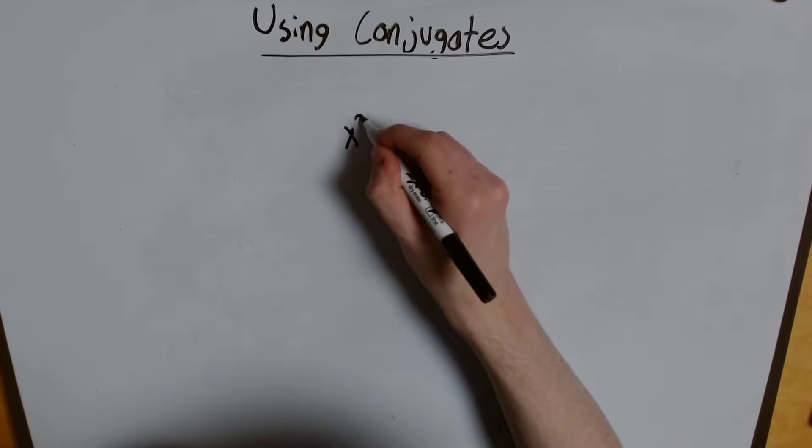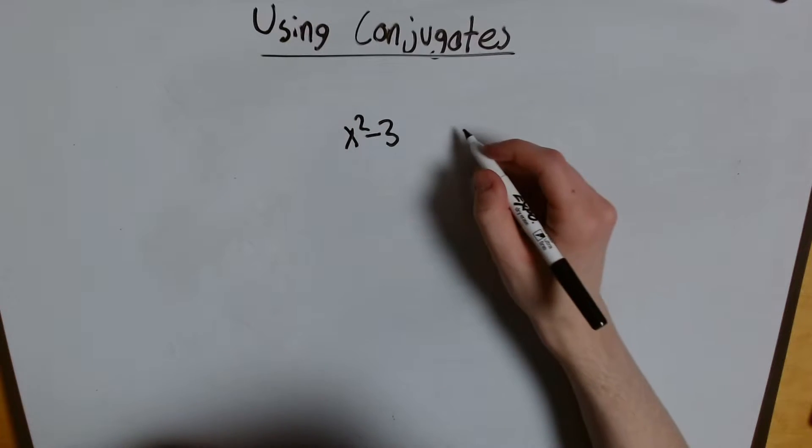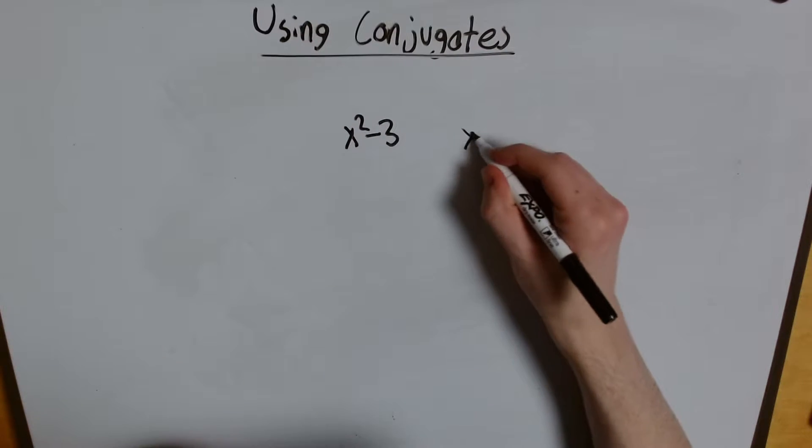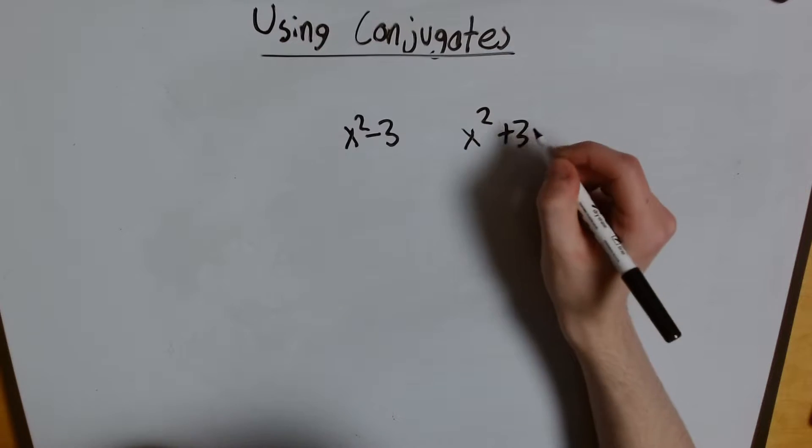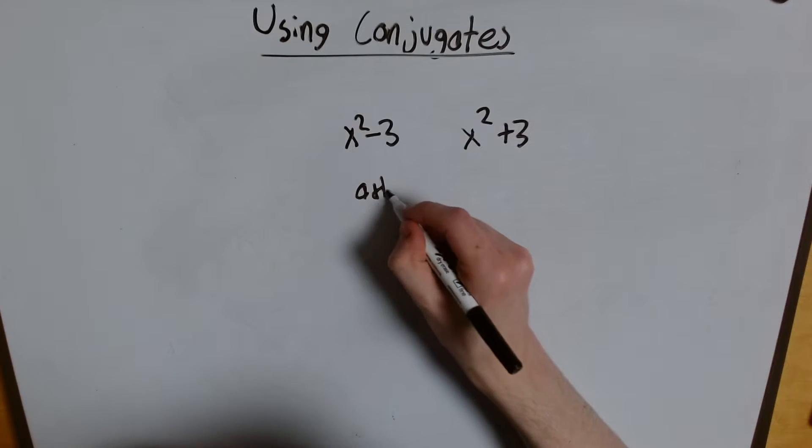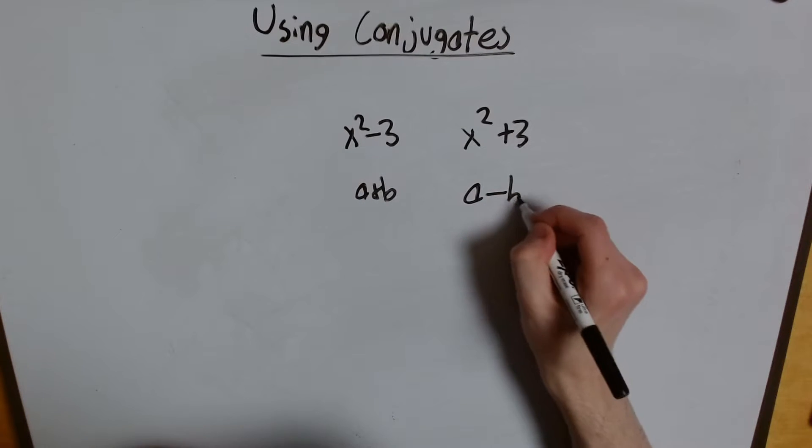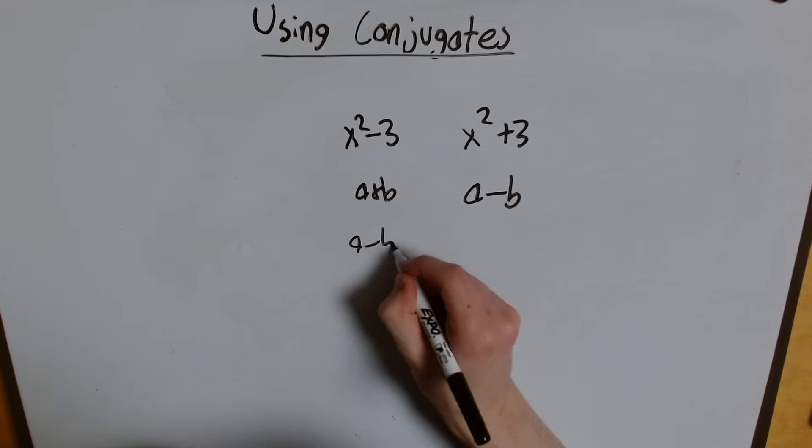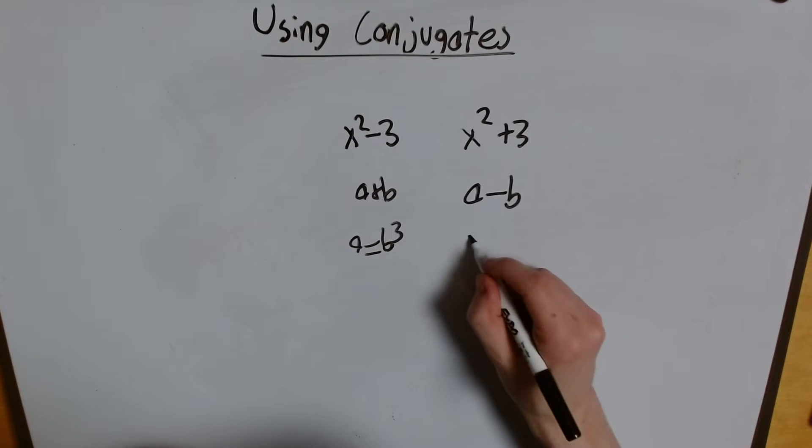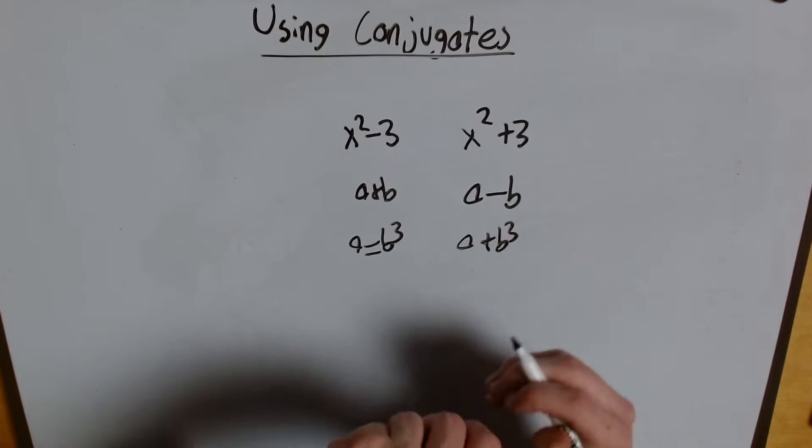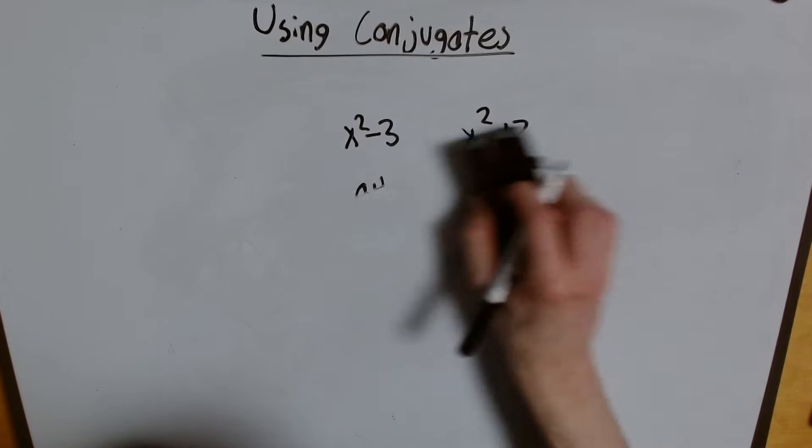So if I was given x squared minus 3, the conjugate of that would be changing the sign. That would be x squared plus 3. If I was given a plus b, the conjugate of that would be changing the sign, or a minus b. If I was given a minus b cubed, I'd change the sign, a plus b cubed. And that all seems pretty simple.